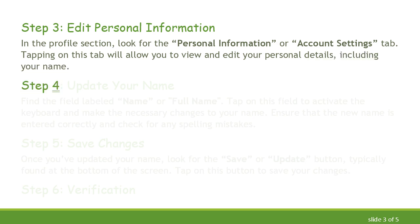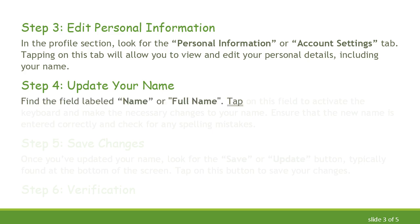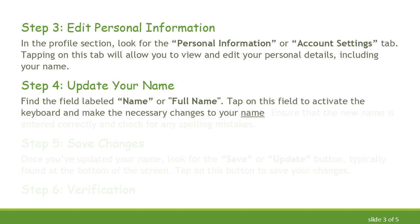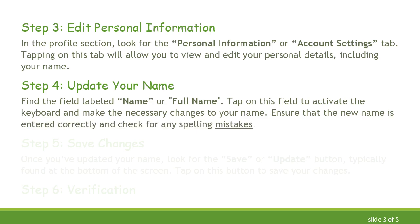Step 4: Update Your Name. Find the field labeled Name or Full Name. Tap on this field to activate the keyboard and make the necessary changes to your name. Ensure that the new name is entered correctly and check for any spelling mistakes.